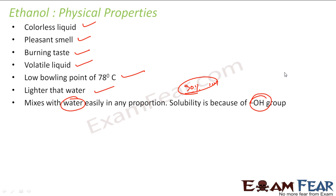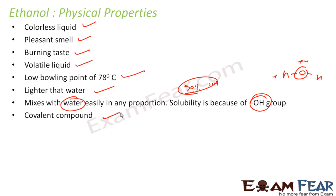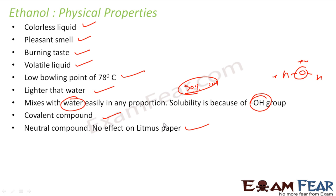Solubility is very high because of the OH group. In water (H2O), the OH group allows it to be soluble. Generally, carbon compounds are not soluble in water, but ethanol is soluble because of the OH group. You should remember that alcohols are generally soluble in water because they have an OH group. Ethanol is a covalent compound and it is neutral — there is no effect on litmus paper.